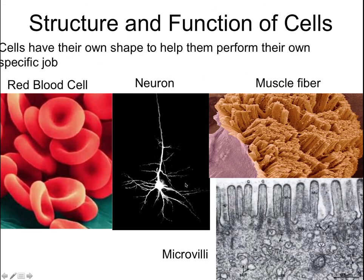The structure and function of cells — just like enzymes and proteins — means everything has a specific shape to do a specific job. A red blood cell looks like a jelly-filled donut; its job is to carry oxygen using hemoglobin. A neuron looks like a bolt of lightning, with many inputs and a long axon to transmit signals. A muscle fiber looks very different from both. And microvilli in the digestive system have yet another unique shape — each cell has a highly specific shape for a highly specific job.